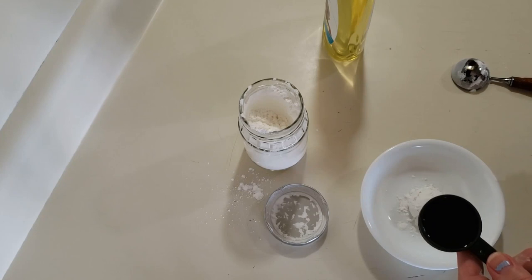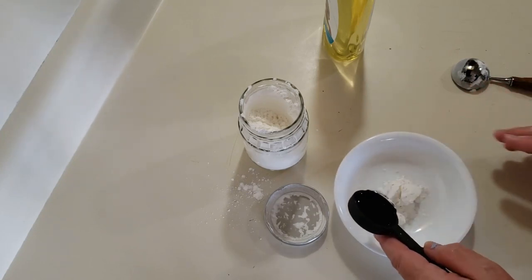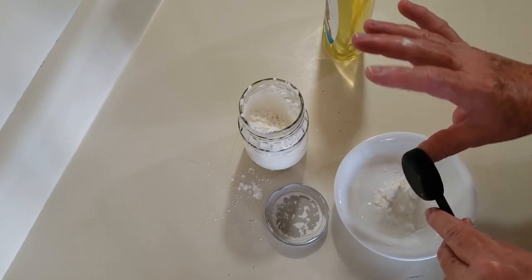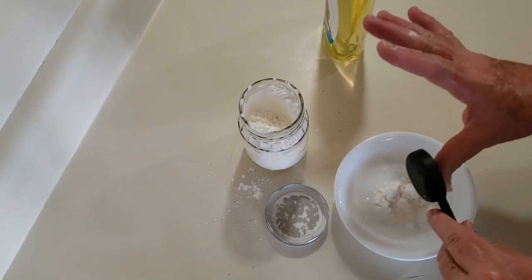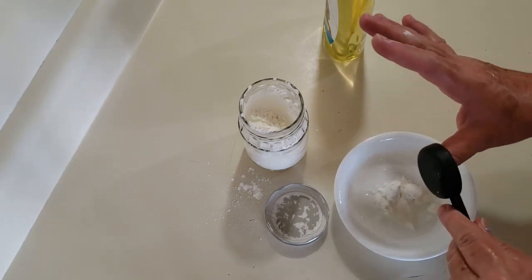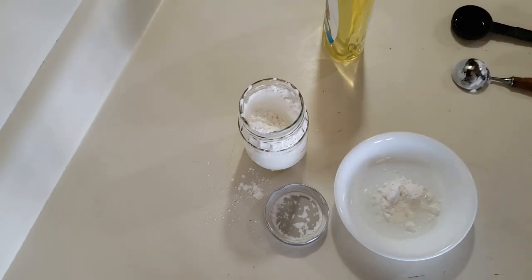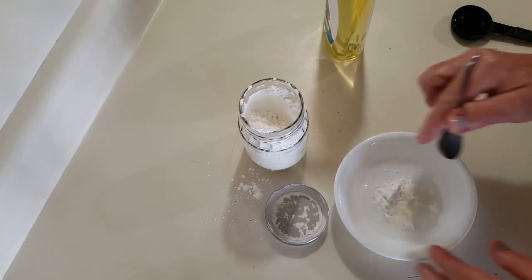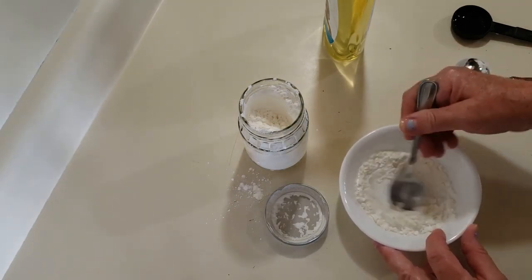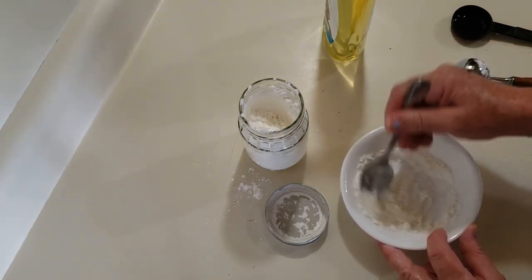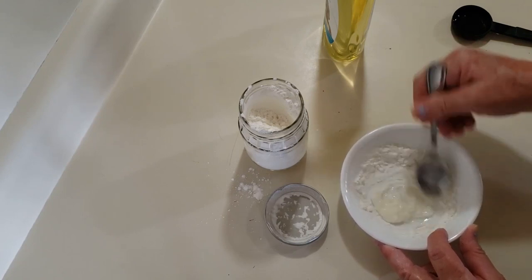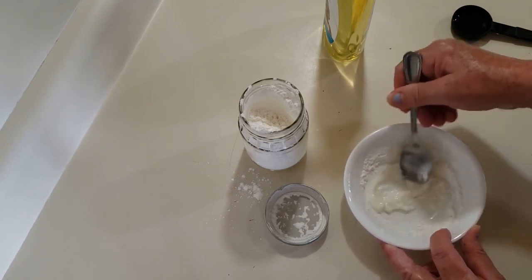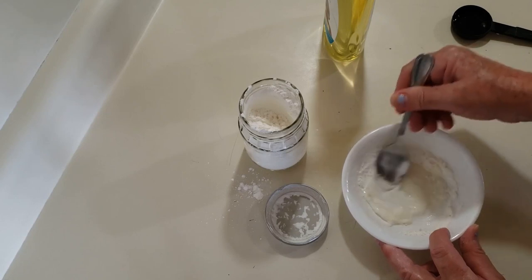So I got a tablespoon that I'm doing of the cornstarch and a tablespoon of the soap. And I'm going to make several colors, but I'll start out here with just one to show you. And we're going to mix this together until it's all combined and nice and smooth.